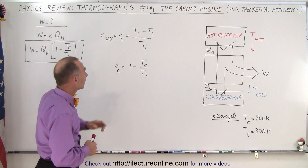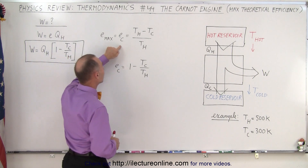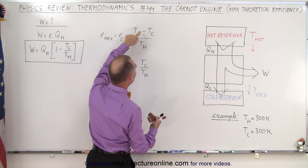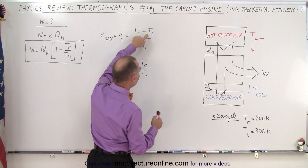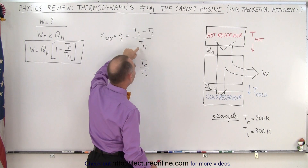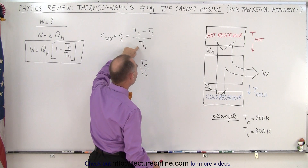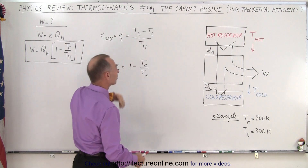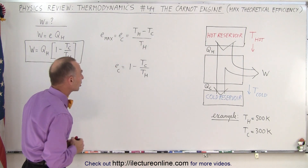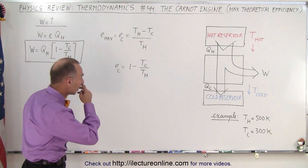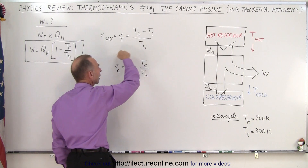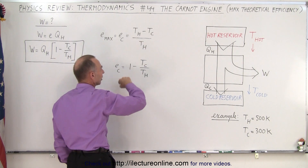Simply put, the efficiency is the difference between the temperature of the heat coming in and the temperature of the heat going out, divided by the temperature of the heat coming in — that is, the energy coming in. When we divide the denominator into the numerator, we can write it in that simplified form.